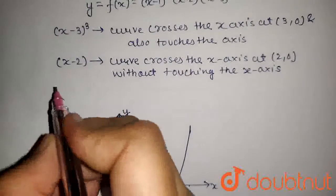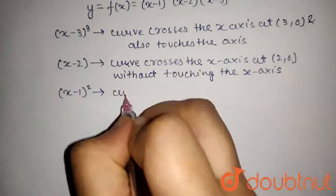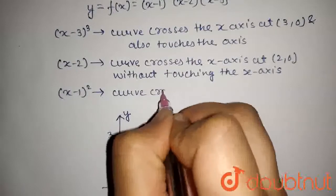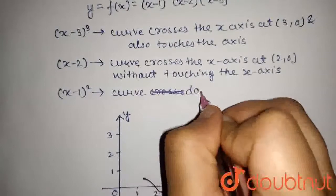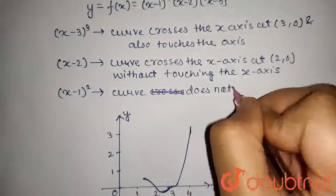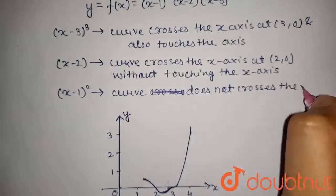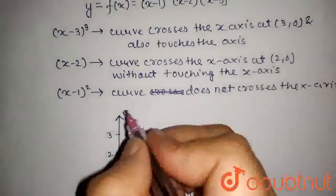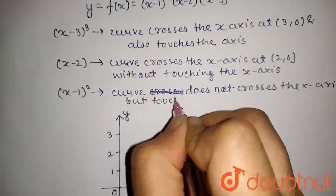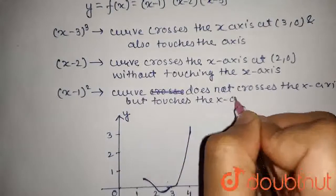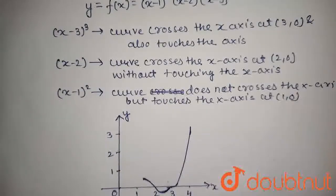So, x minus 1 to the whole square. Here, this curve does not cross the x-axis but it touches the x-axis at 1 comma 0.